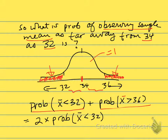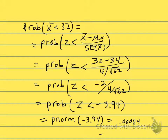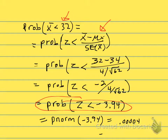Since the normal distribution is symmetric, that's just two times the probability that X-bar is less than or equal to 32. The probability that X-bar is less than 32 is the same as the probability that Z is less than the corresponding value. Doing the math, that's the probability that Z is less than negative 3.94. We can go to R and compute the probability that a standard normal variable is less than negative 3.94.